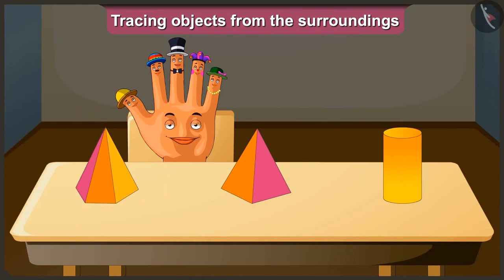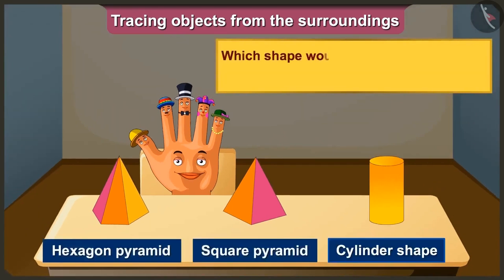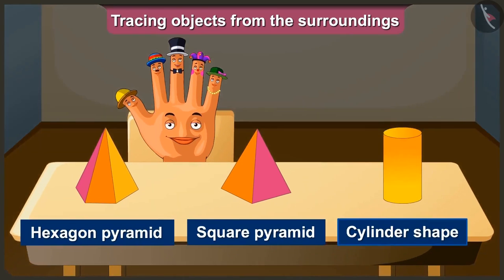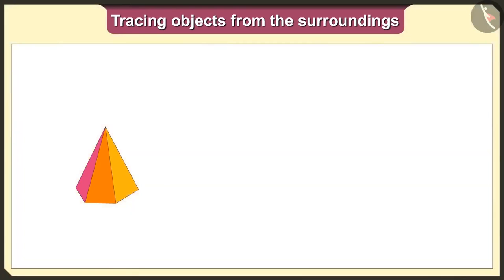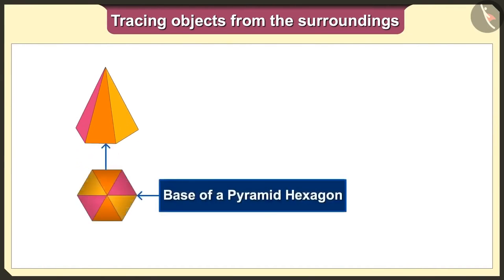Friends, did you practice tracing of objects? Now tell me, which shape would we get when we trace these solid-shaped blocks? First of all, we will keep the hexagon pyramid on a paper and trace it. The base of this hexagon pyramid is hexagon.